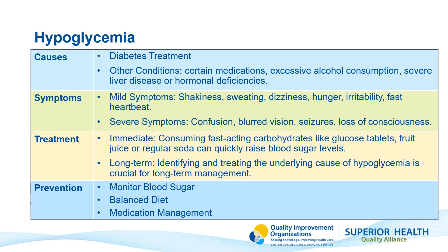Long-term treatment involves identifying and addressing the underlying causes of hypoglycemia. To prevent it, you need to check your blood sugars regularly, eat regular meals and snacks, avoid skipping meals, and follow your healthcare provider's instructions regarding your medications. Hypoglycemia requires prompt treatment to prevent serious complications.